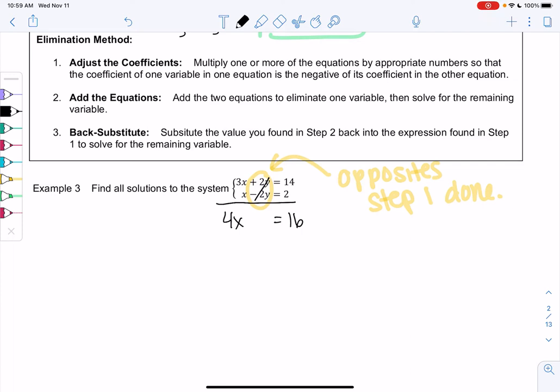And then we'll go ahead and solve this. We're still in step two. Divide by four, divide by four, and we get x equals four.